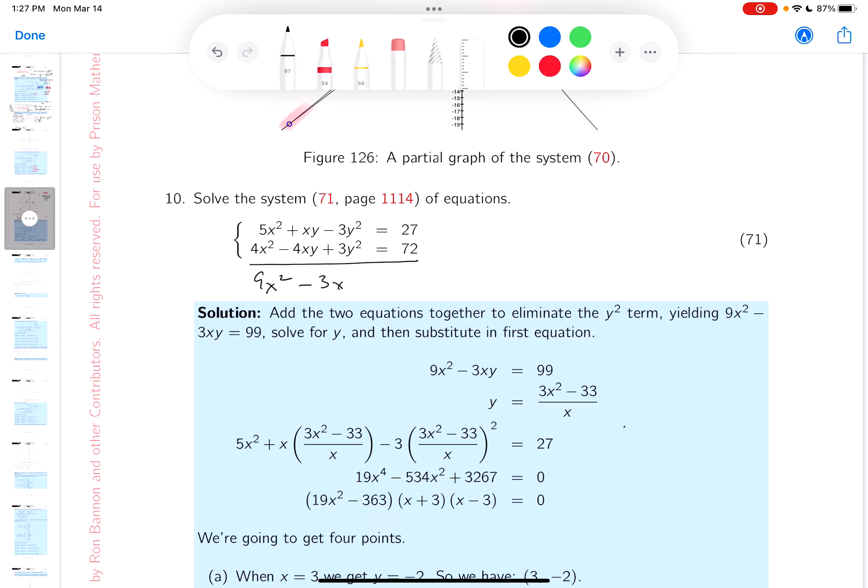Let's see. Minus 3xy. And then you get, what? 99, right? I think I divide by 3, right? What do you get? 3x²